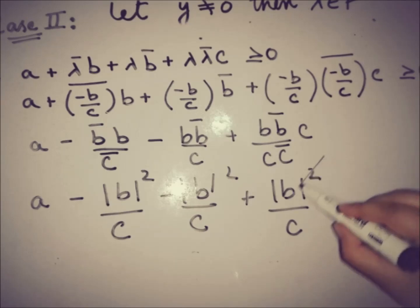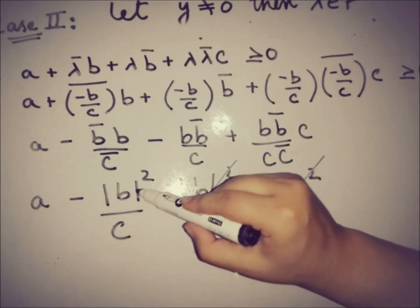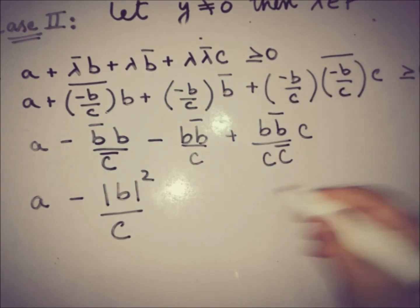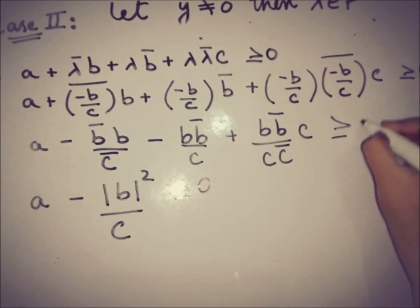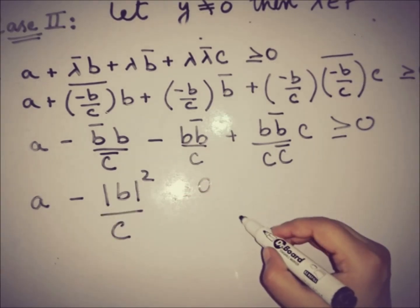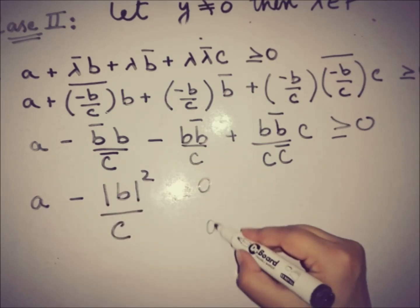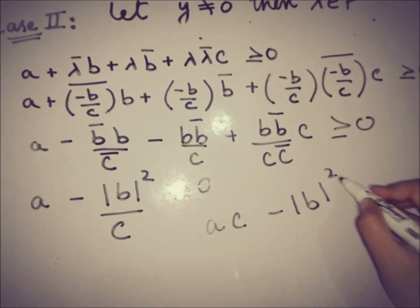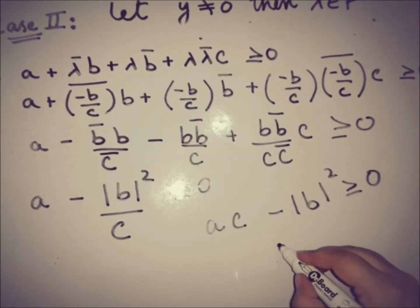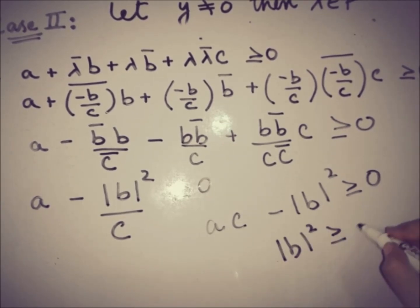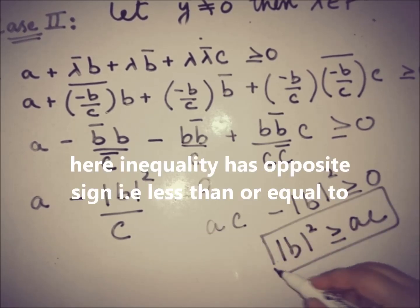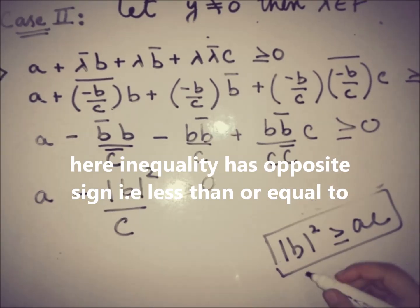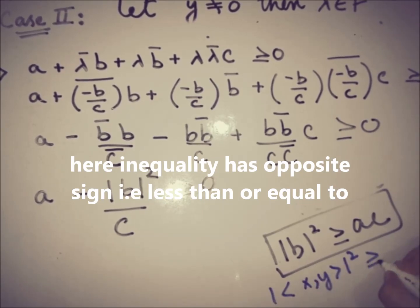After cancellation, we are left with a − |b|²/c ≥ 0. Since c > 0, multiplying through by c gives ac − |b|² ≥ 0, or equivalently |b|² ≤ ac. Substituting back: |⟨x, y⟩|² ≤ ⟨x, x⟩·⟨y, y⟩.